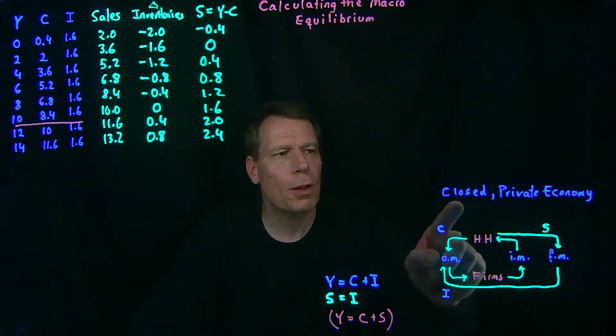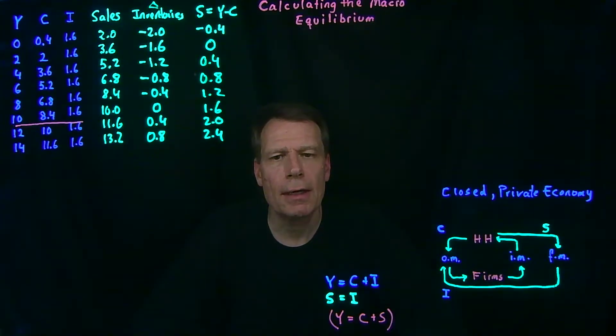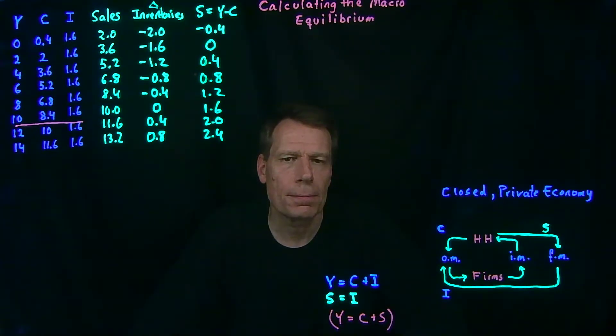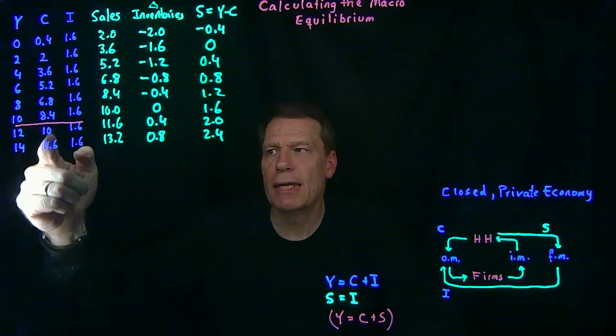Now that we know a bit about our closed private Puddle Town economy, we can ask how would we actually go about calculating the macro equilibrium in this economy? If you look at this table, we've made an assumption about how consumption changes as income changes.